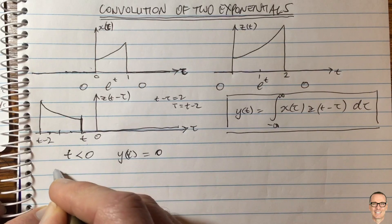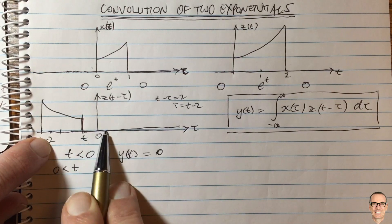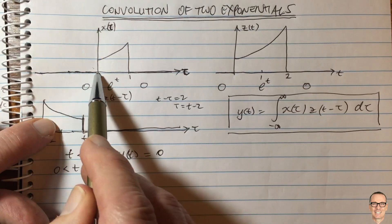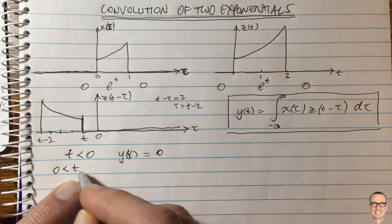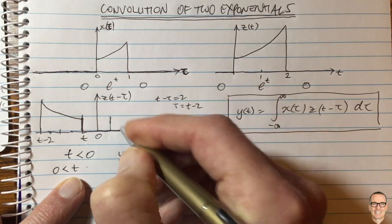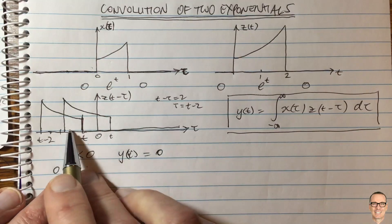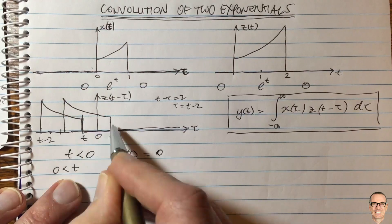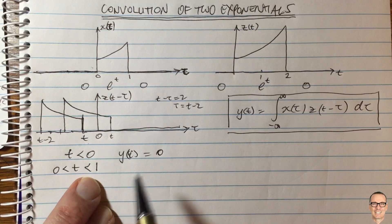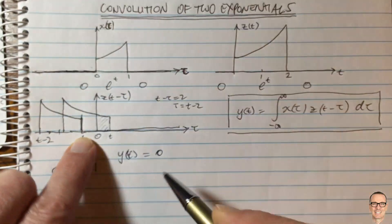For t bigger than zero, we shift t slightly to the right. The overlap will be between zero and t, because the region to the left of zero is still multiplied by zero. So for t from zero up to one, the overlap region is from zero to t. This part of the graph is multiplied by that zero, and this part by that zero, leaving just the overlapping section.